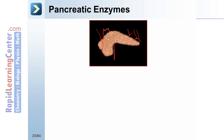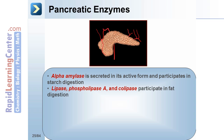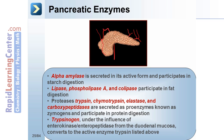There are also a number of pancreatic enzymes. They include alpha-amylase, which is secreted in its active form and participates in starch digestion. Lipase, phospholipase A, and colipase participate in fat digestion. The proteases trypsin, chymotrypsin, elastase, and carboxypeptidases are secreted as proenzymes, known as zymogens, and participate in protein digestion. Trypsinogen, under the influence of enterokinase or enteropeptidase from the duodenal mucosa, converts to the active enzyme trypsin.